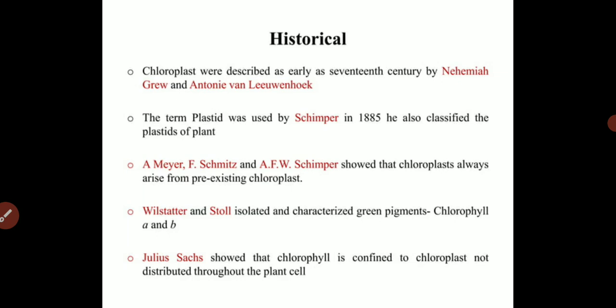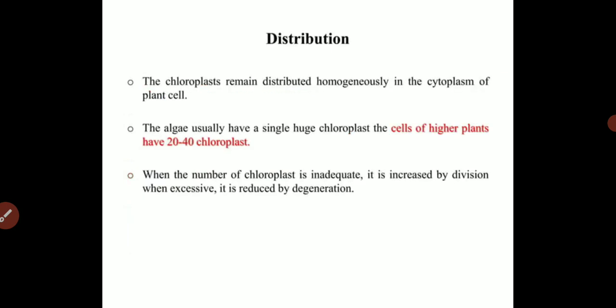Willstätter and Stoll isolated and characterized the green pigments chlorophyll a and b from the chloroplast. Julius Sachs showed that chlorophyll is confined to the chloroplast and is not distributed throughout the plant cell.